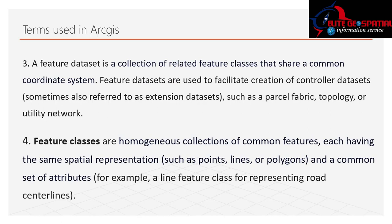A Feature Dataset is the next concept. Returning to the Ahmadu Bello University analogy — ABU is the geodatabase. Inside ABU there are 17 faculties. Those 17 faculties can be considered a Feature Dataset — a collection of related feature classes that share a common coordinate system.